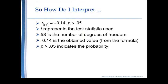In slide 11 Salkind has written out the results of the t-test in a fashion you would often see published in a journal. Results are written with an italicized t, followed by the degrees of freedom in parentheses as a subscript, then an equal sign, then the obtained value — in this example negative 0.14 — then the probability, which in this case is greater than 0.05, indicated by the greater-than symbol.